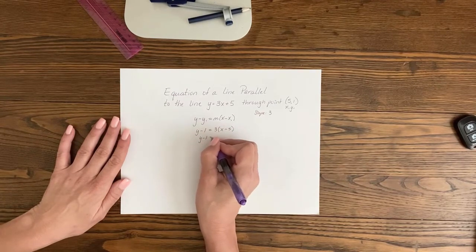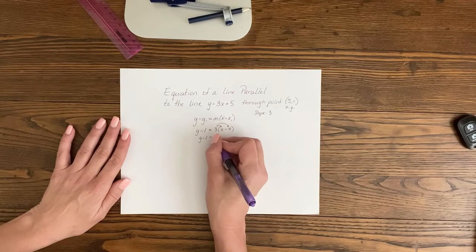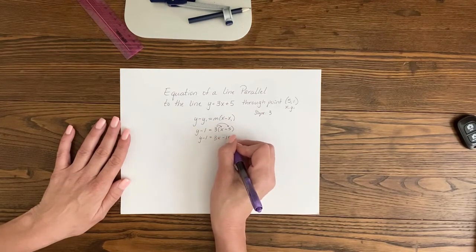So y minus 1 equals, and then we distribute our 3 into the parentheses for 3x minus 15.